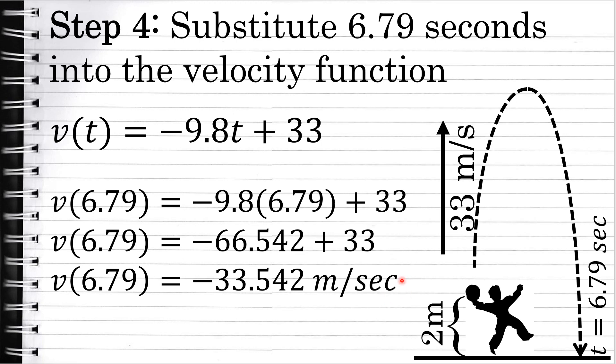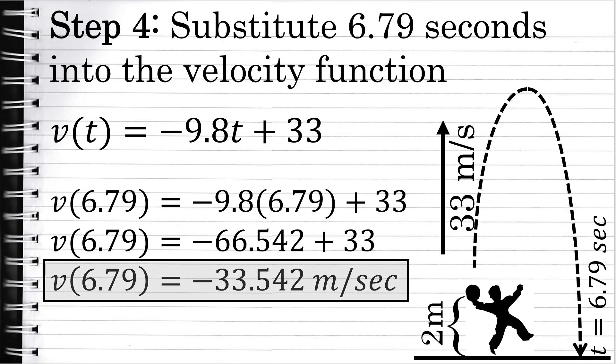This is the velocity of the ball when it hits the ground. The velocity is negative because the ball will, of course, be traveling downward at the time it hits the ground. The solution to the problem — the velocity when the ball hits the ground — is negative 33.542 meters per second.